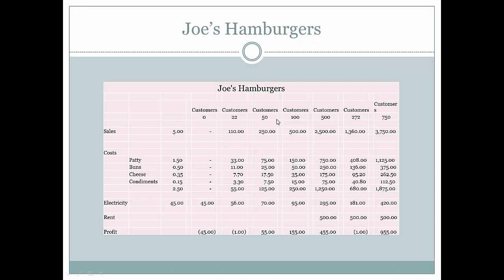His business is growing. With 100 customers, sales are $500. Variable costs that vary in relationship to the number of hamburgers sold are $250. His electricity is $95, and now he's made $155.